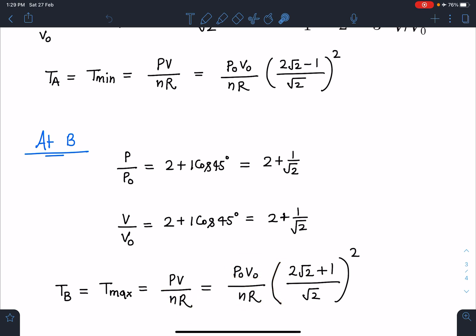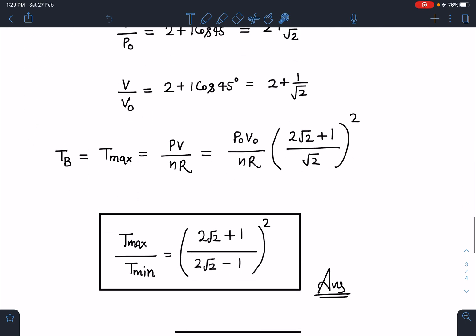This T_max/T_min ratio is going to come as [(2√2+1)/(2√2-1)]² - this is the answer for this problem.